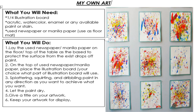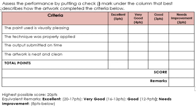Give a title to your artwork and keep it for display. Assess your performance by putting a check mark under the columns that best describe how the artwork completed the criteria: paint used is visually pleasing — 5 points; technique was properly applied — 5 points; output submitted on time — 5 points; artwork is neat and clean — 5 points. The highest possible score is 20 points. Remarks: Excellent 20–17, Very Good 16–13, Good 9–12, Needs Improvement 0–8.